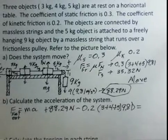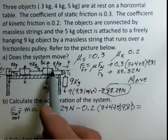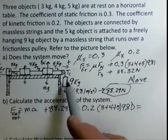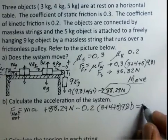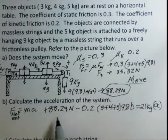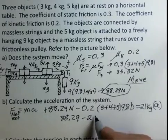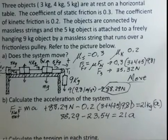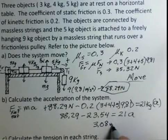On the right side of F = ma, the total mass accelerating is 9 + 5 + 4 + 3 = 21 kilograms. Working it out: 88.29 minus the kinetic friction of 23.54 newtons, divided by 21 kilograms, gives an acceleration of 3.08 meters per second squared.